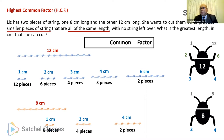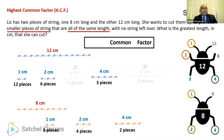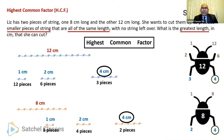The question asks for the greatest length, so now that we have found the common factors, we need the highest one. As you can see, it is 4 centimeters — that is the greatest length of string that can be cut from both the 12 and 8 centimeter strings respectively. The correct answer is 4 centimeters. And that's what brings us to the concept of highest common factor: out of the factors that are common, the highest one is the highest common factor.